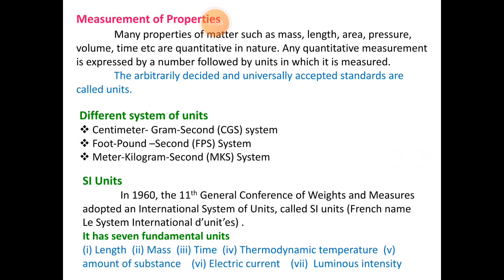Now, measurement of properties. To measure any property, it contains a number and a unit. Any quantity you measure — mass, length, area, pressure, volume, time — always has a number and a unit. For example, 4 liters: 4 is the number and liter is the unit; 20 km: 20 is the number and kilometer is the unit. Any measurement has a number and unit written with it. A unit is defined as: arbitrarily decided and universally accepted standards are called units.